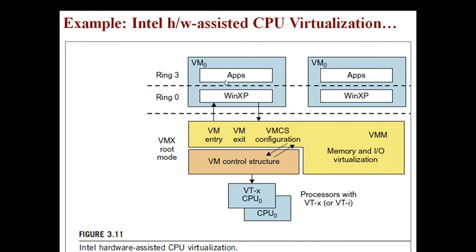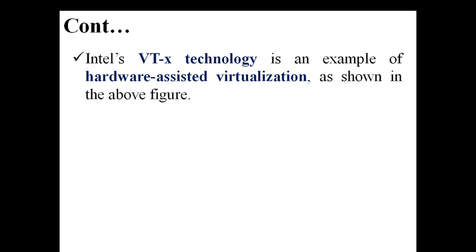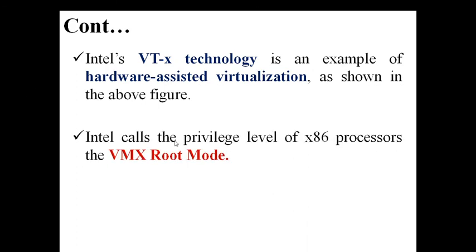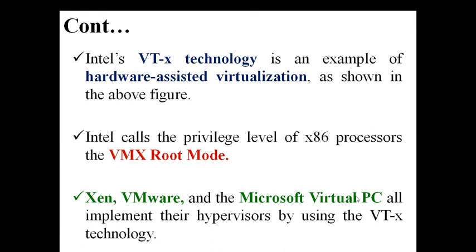Ring 1 through ring 3 give privilege to virtual machines. The VMX — Virtual Machine Extension root mode — is the privileged mode through which a virtual machine can control memory or I/O devices. All VMs run under the control of ring 0, which is the operating system. Whenever they convert to privileged mode, they are in VMX root mode. Intel calls this privileged level of the 8086 processor VMX root mode. VMware and Microsoft Virtual PC both implement their hypervisor using VTX technology.